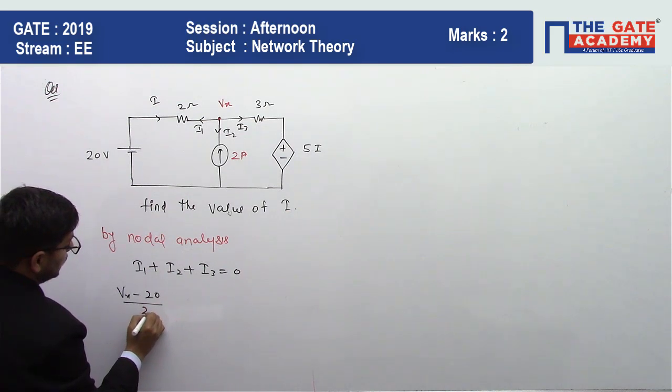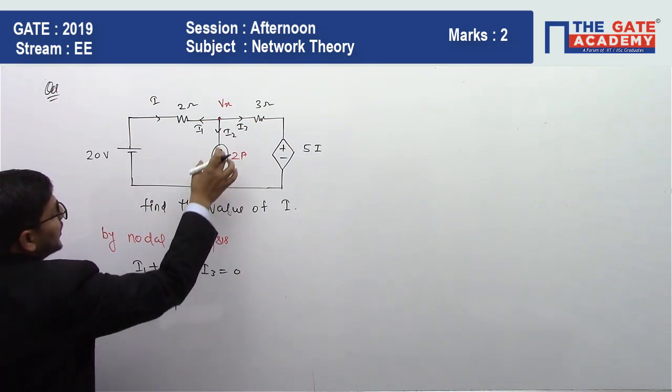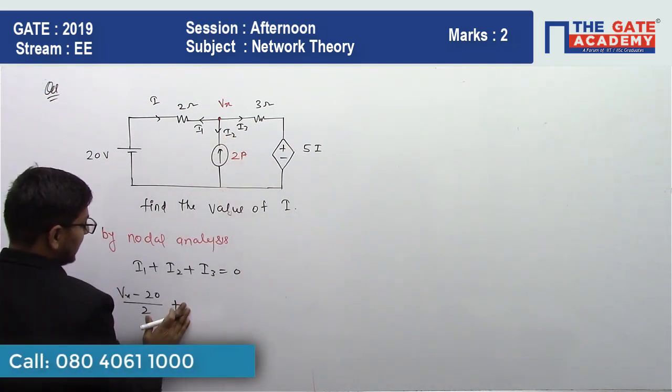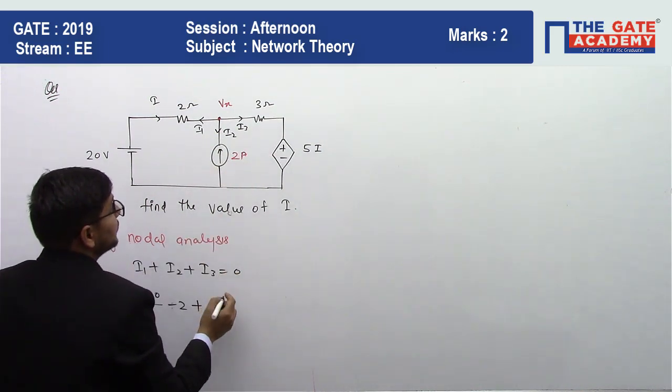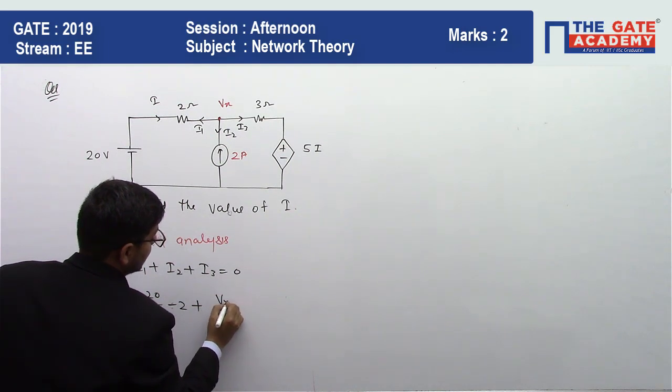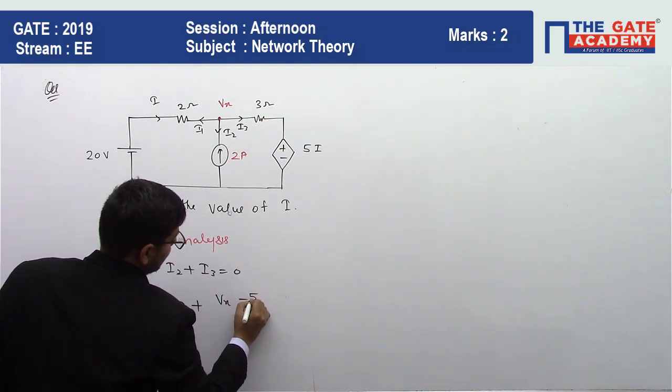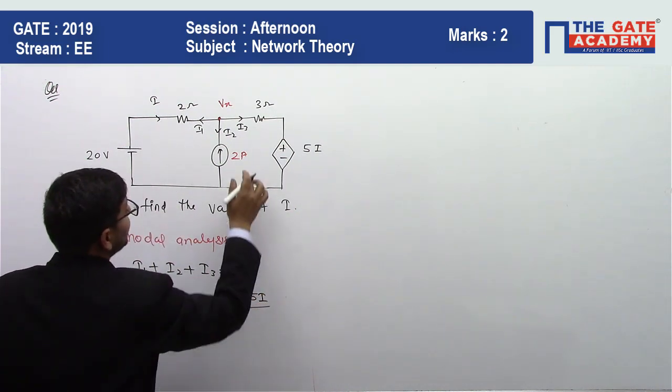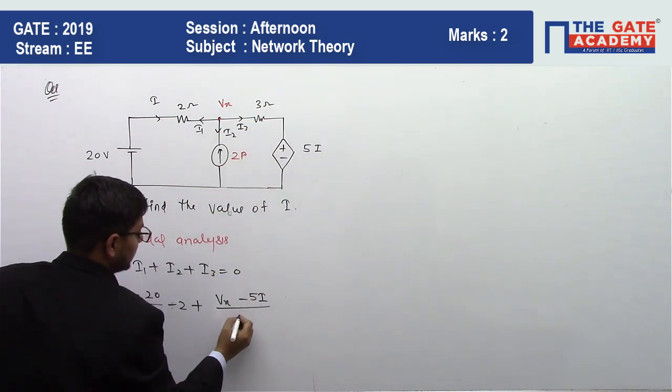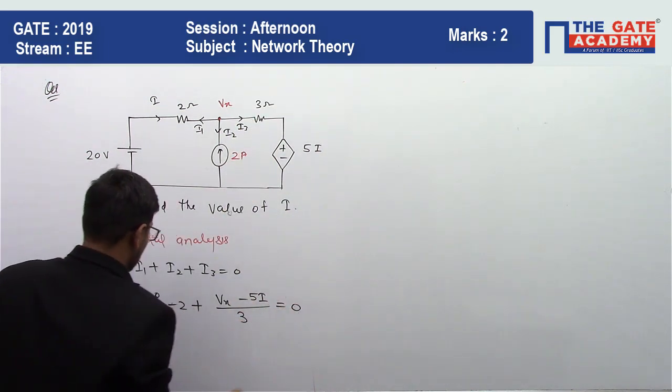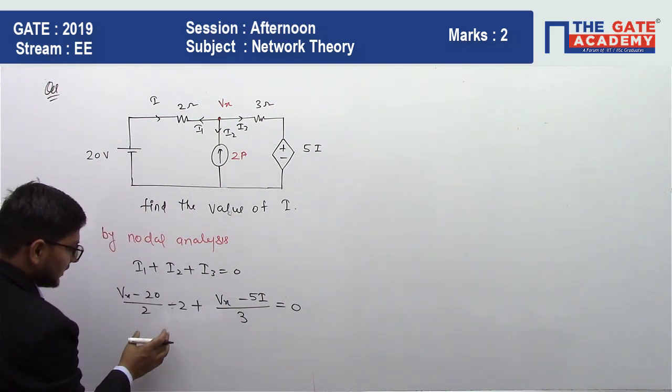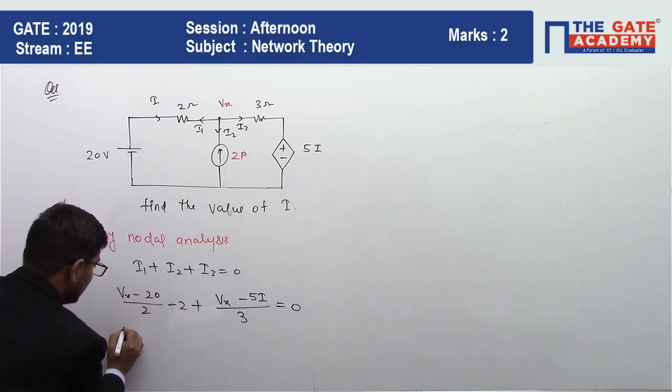Minus 2 plus the value of I3, which will be equal to Vx minus 5I upon 3, equals 0. After solving this, just take LCM 6 and solve. It will be equal to 3Vx minus 60 minus 12 plus 2Vx minus 10I equals 0.